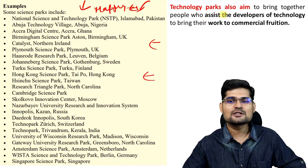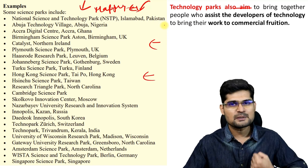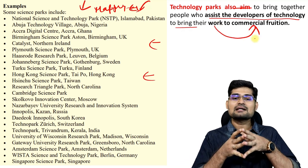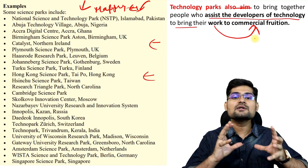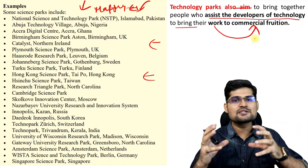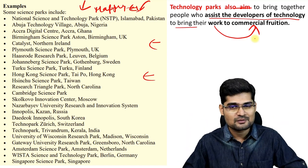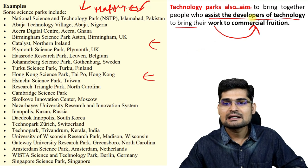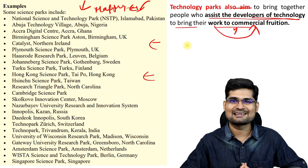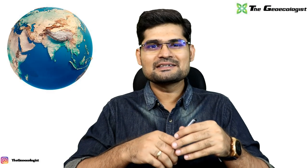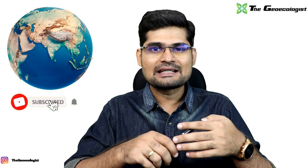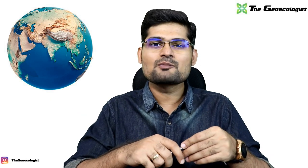Technology parks aim to bring together knowledgeable people who assist the developers of technology to bring their work to commercial fruition. Technology people don't always know business, so technology parks facilitate the meeting of technology developers and entrepreneurs together. They are places which facilitate bringing together these two kinds of people — the developers of technology and the entrepreneurs alongside them. Having learned the concept of special economic zones, their function in the world and in India, and technology parks, in sessions to come we'll discuss more aspects of economic geography. Stay tuned, stay safe, keep learning.